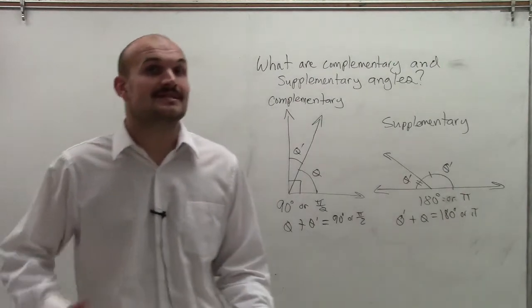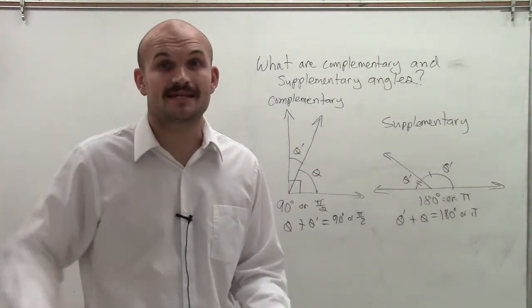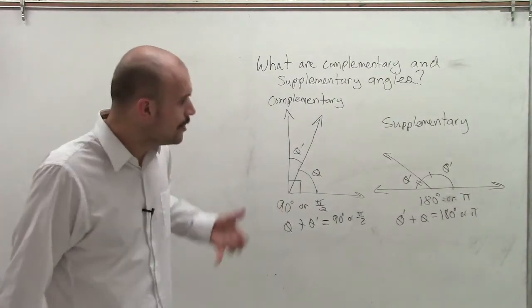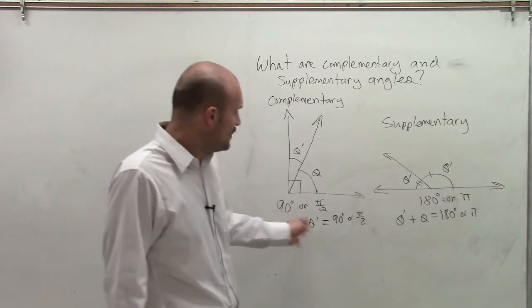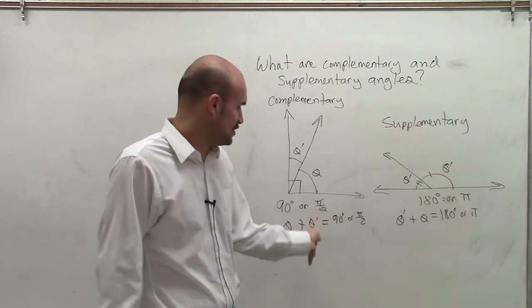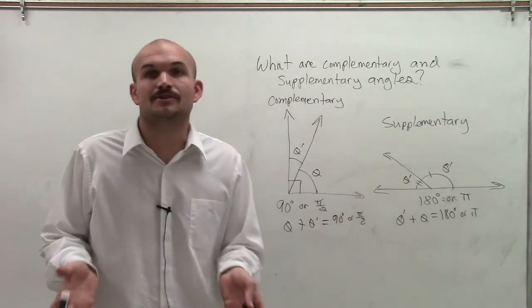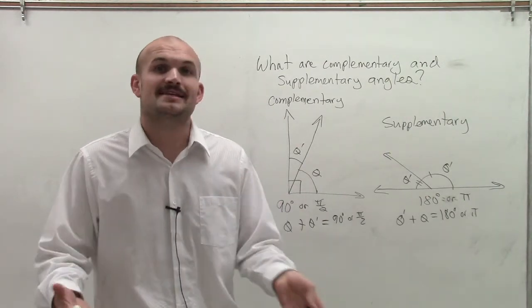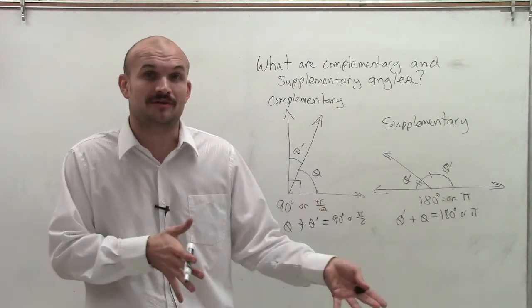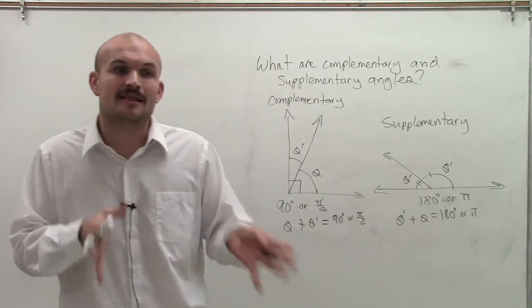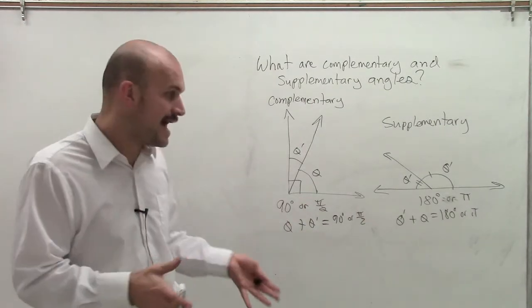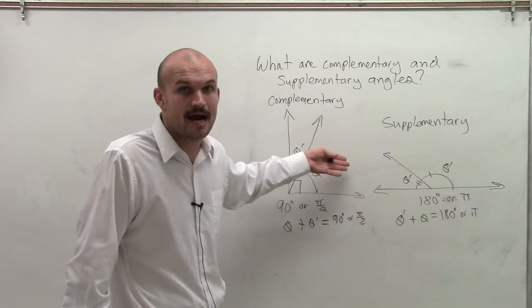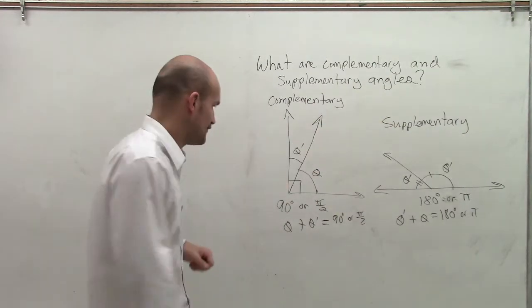So if I'm giving you an angle and I say, hey, find the complementary, find the supplementary angle, what you need to understand is we can set up an equation thereby solving for theta prime, which we're going to say is our unknown angle. Let's say I give you an angle theta and I say find the other angle that's complementary to that or supplementary to that angle. That means I want to find the other angle that's going to add to it that's either going to make it complementary or a supplementary angle. So therefore,